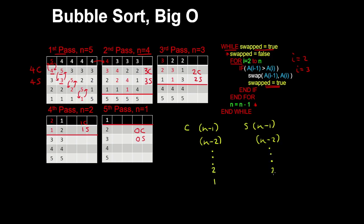down to 1 comparison and 1 swap — ignoring the 0 in the final pass. In a normal case, you won't get as many swaps, so we use the comparisons to determine the order of the algorithm.